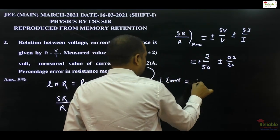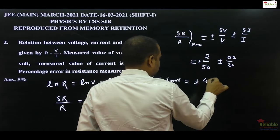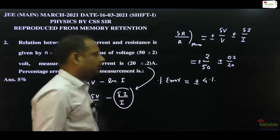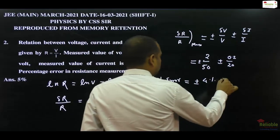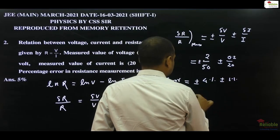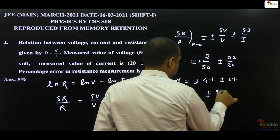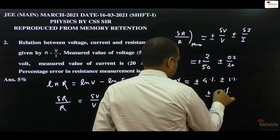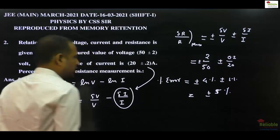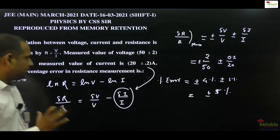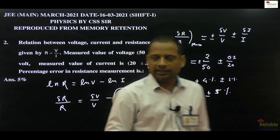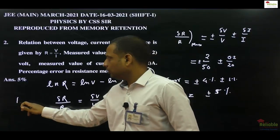Plus minus 4% here, and plus minus 1% here, so it will be plus minus 5%. This will be the error - plus minus 5% error. I will put this question in easy category, and this question is from error analysis.